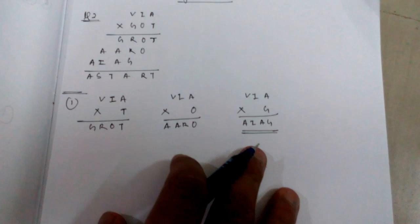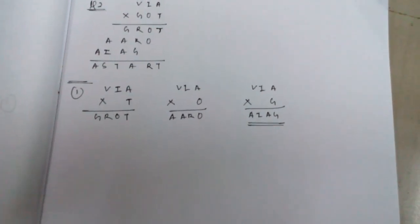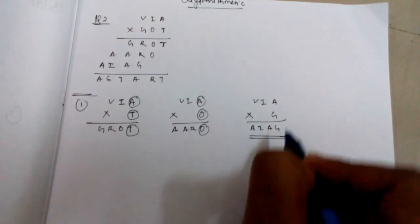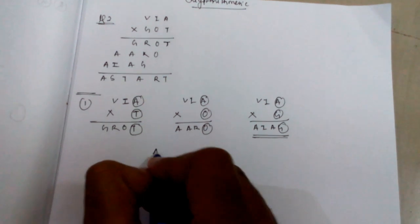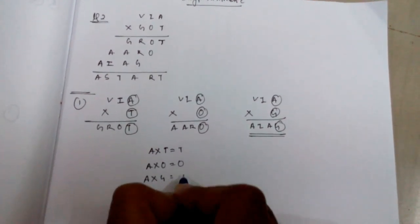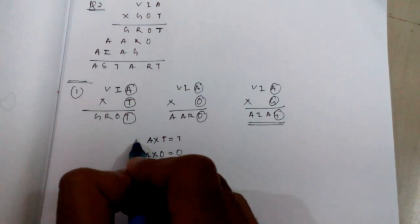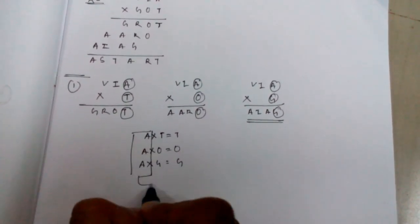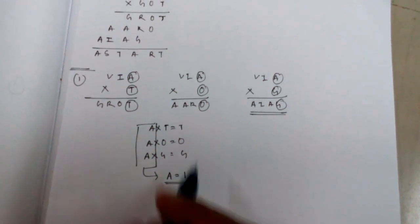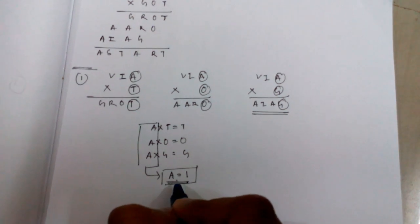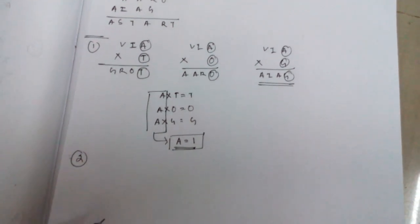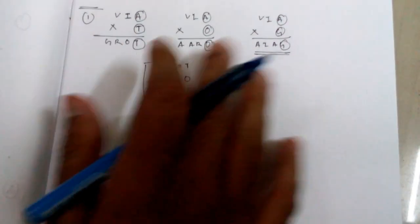Out of these three cases, we can notice that A into T gives T, A into O gives O, and A into G gives G. So A into T equals T, A into O equals O, A into G equals G. From this we can conclude that the value of A equals 1, since multiplying any number by 1 gives the same number. So A equals 1 is fixed.